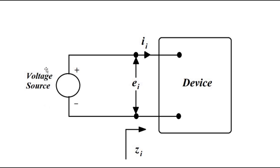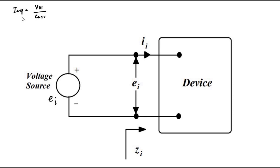First we'll deal with input impedance. Let us say we have the original signal in the form of a voltage source of value E_i. We have a device — which we can consider as a measurement device or a subsystem — connected to this voltage source. As a result, a current I_i (the input current) flows, and the input impedance Z_i is given by E_i divided by I_i.